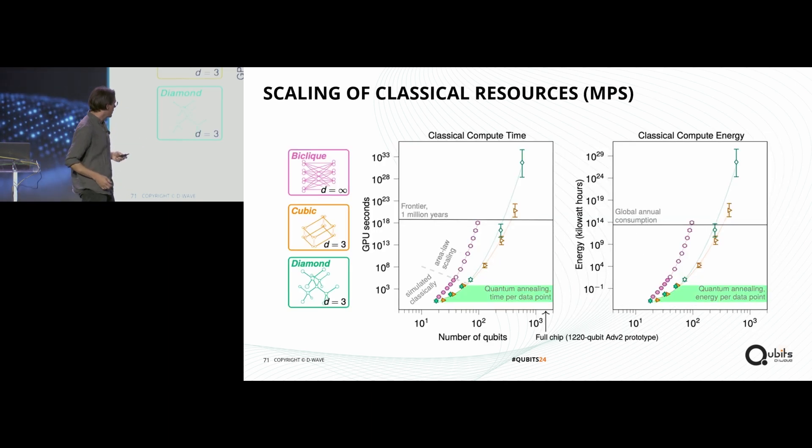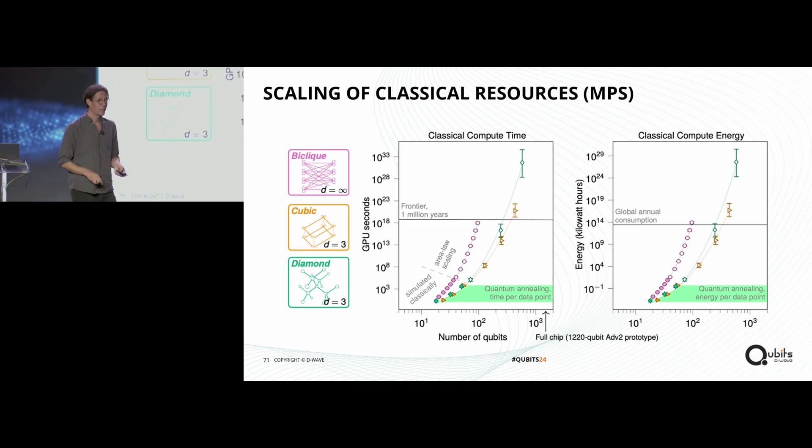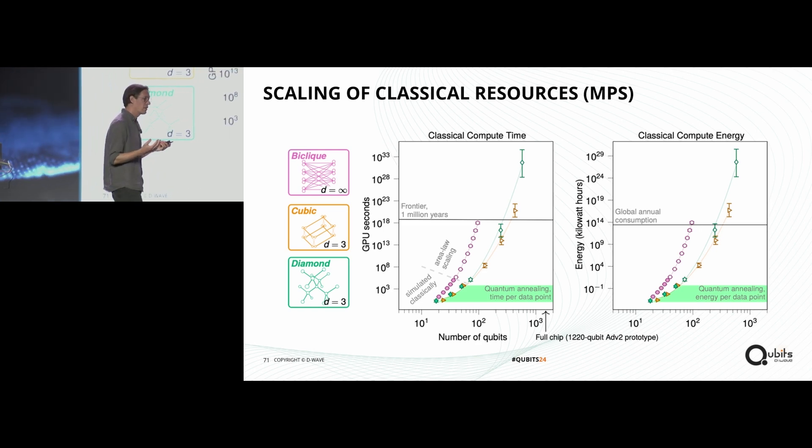Alan already showed this slide, so I might go through it a little bit too quickly. But if we look at the classical compute time, we can see that for the largest inputs that we're simulating, this is absolutely hopeless. Frontier, if we could magically parallelize everything and they let us run on the whole supercomputer for a million years, we could solve some of them, some of the instances, whereas it takes just a few minutes with quantum annealing. In terms of energy consumption, the bar here is global annual electricity consumption. This is obviously totally infeasible, which is why we consider this to be in the supremacy regime.